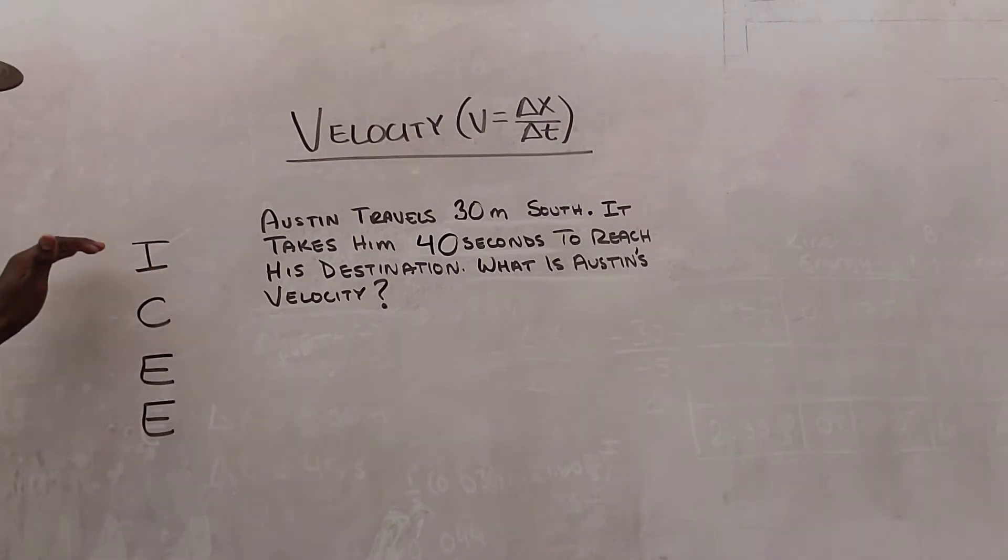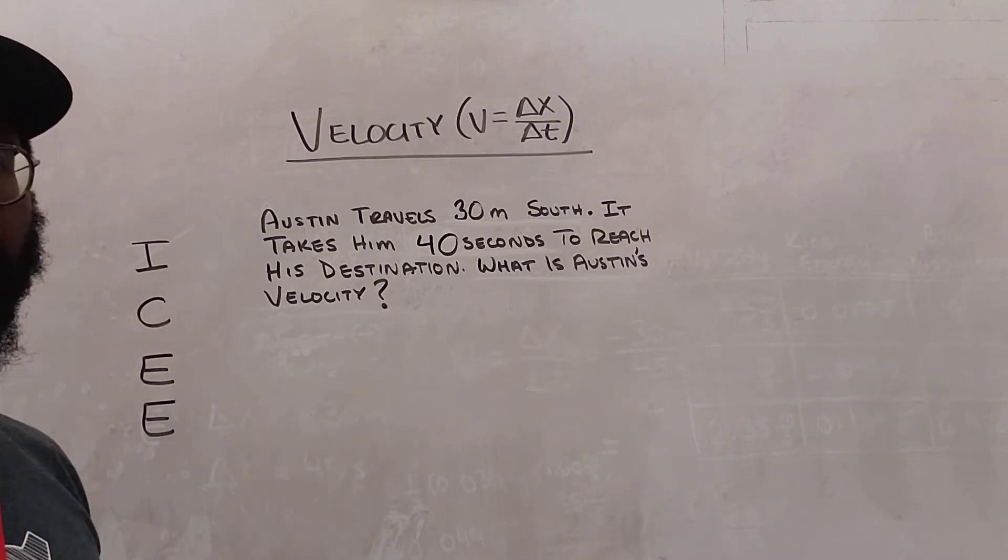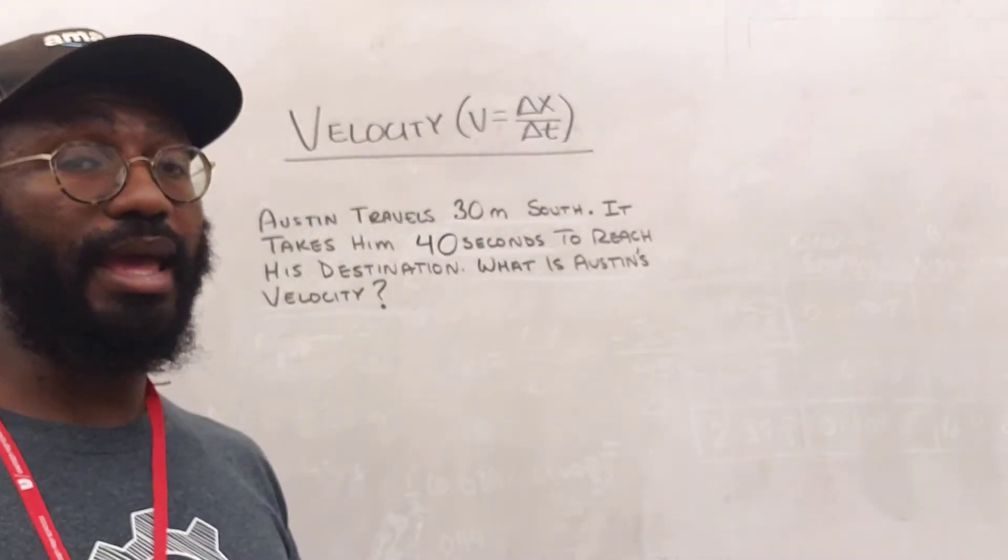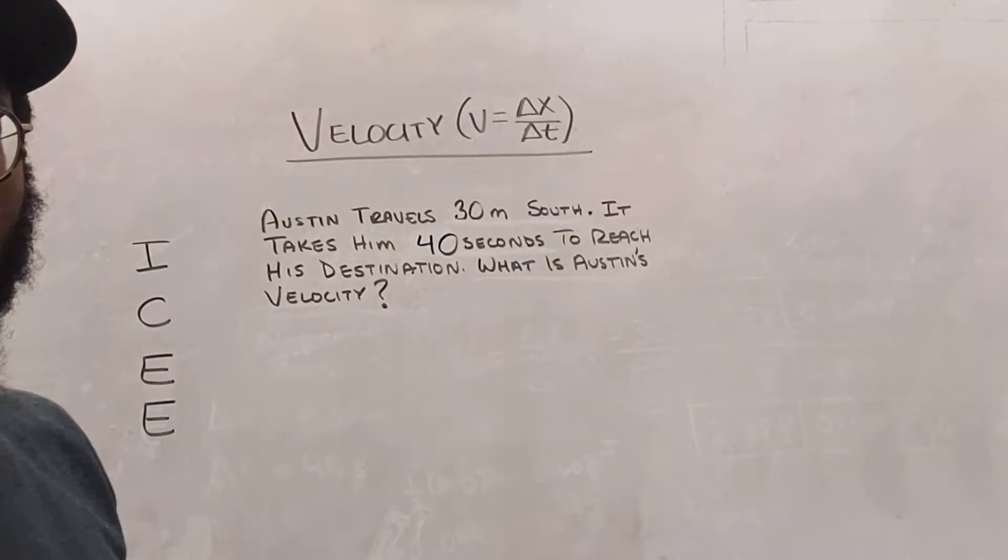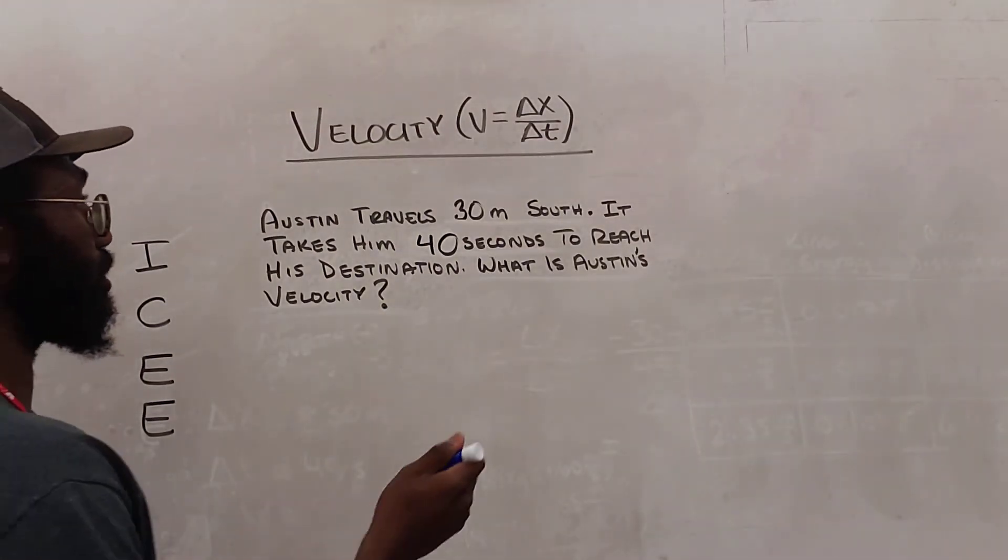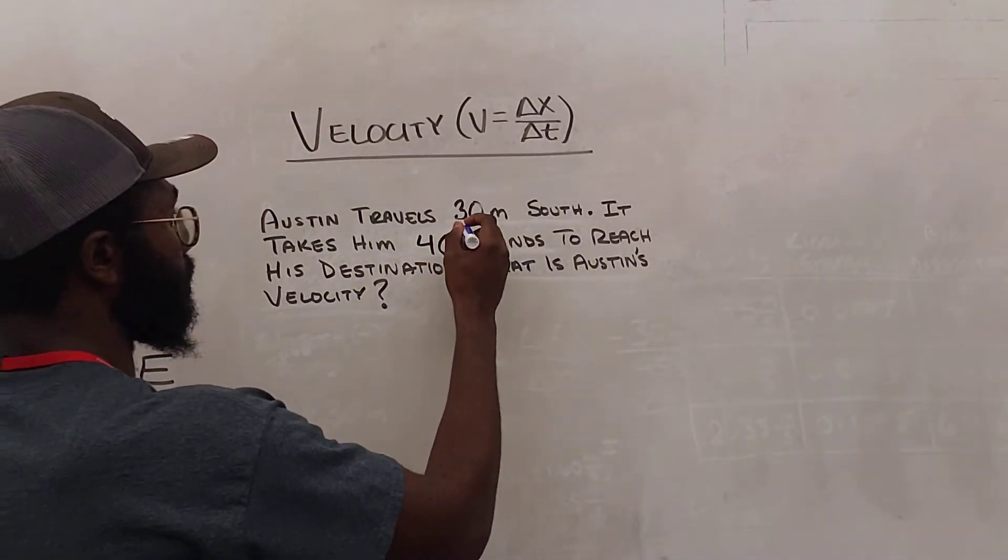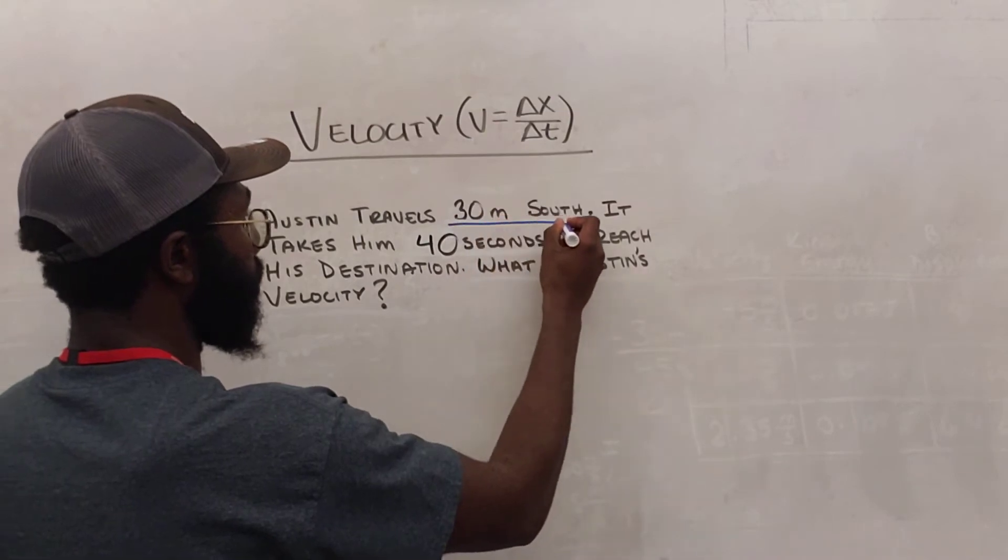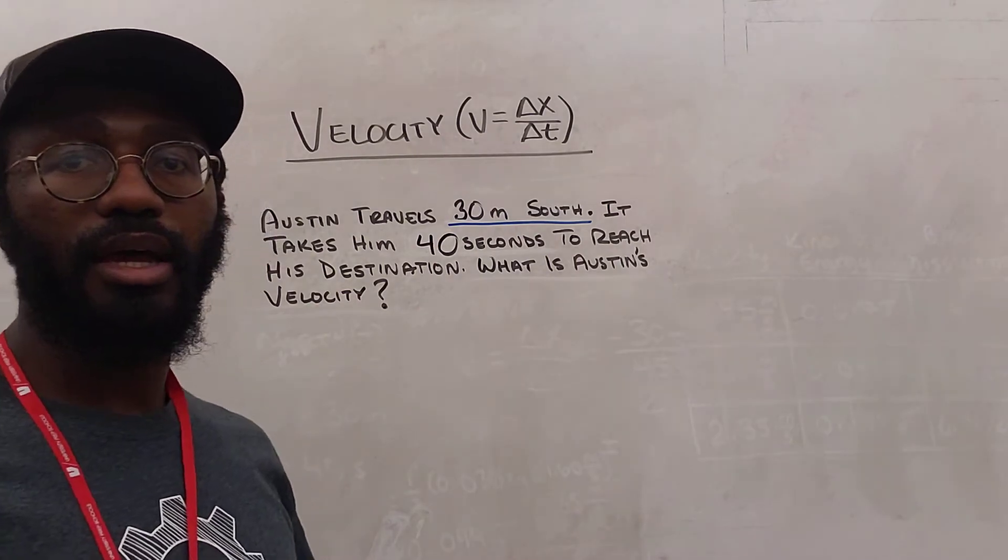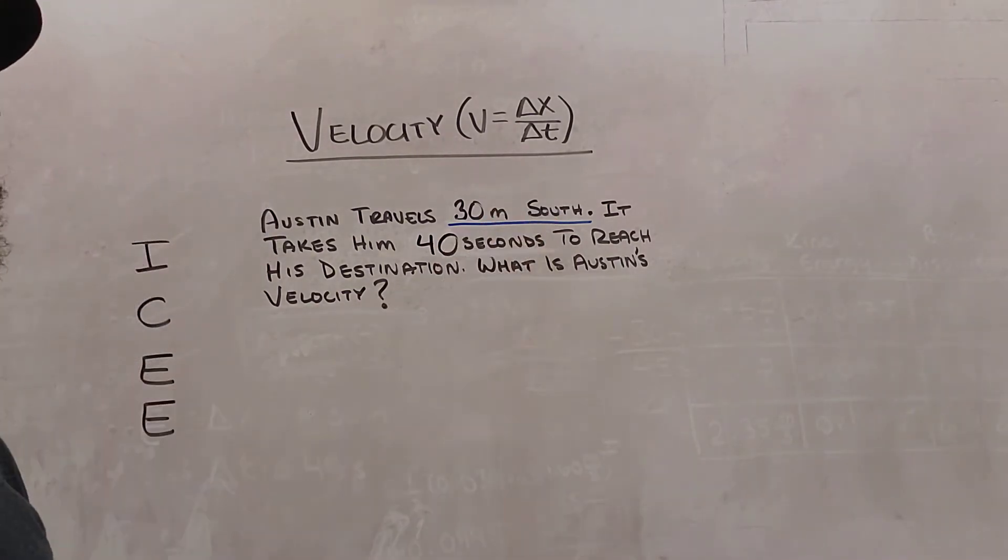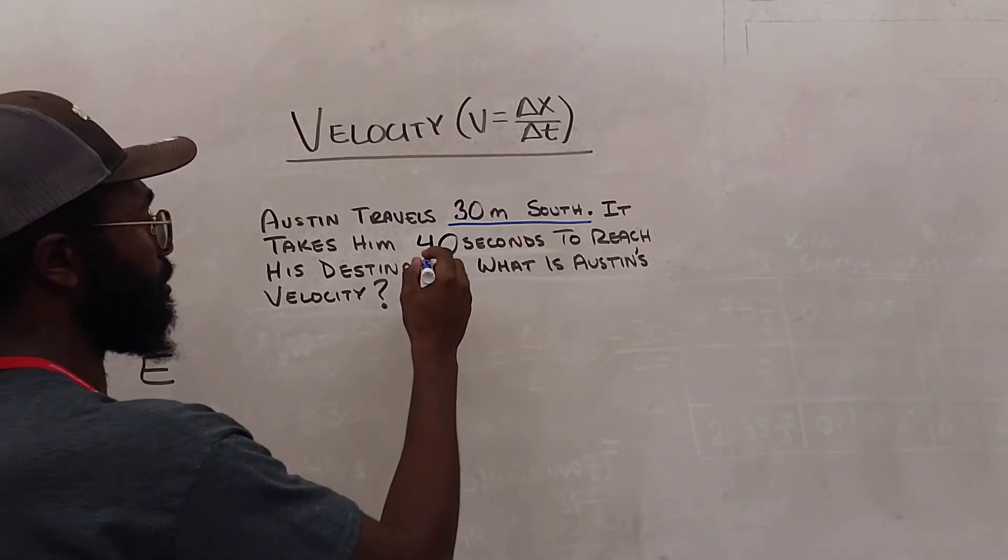In order to solve this problem, we're going to start with our identify step. When we do the identify step, we're going to identify any measurements and the question that the problem is asking us. So let's go ahead and use our blue marker to identify those things. So we have 30 meters south. Notice that I did underline south. The direction is also important when we are identifying the measurement.